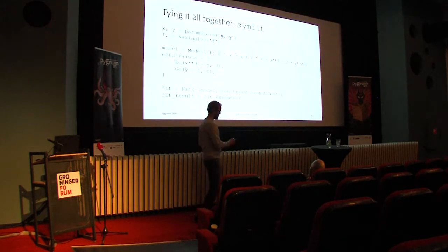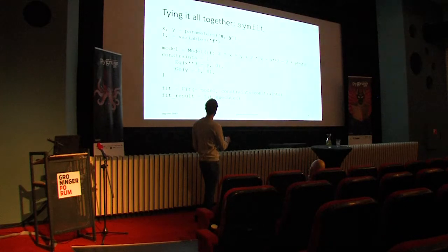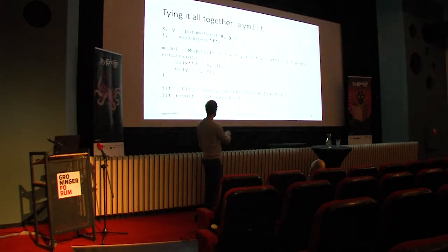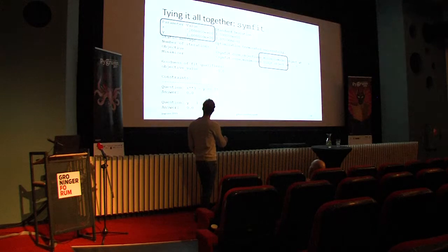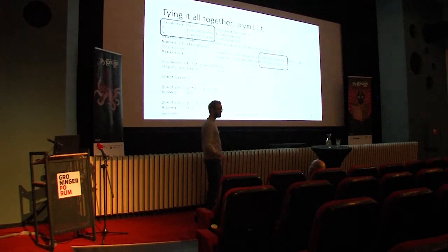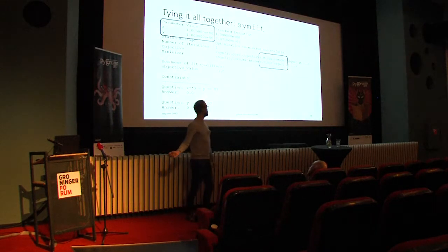Upping the difficulty level, starting from the same model but adding constraints - x cubed minus y equals one, and y minus one greater or equal to zero - adding the constraints is simply a matter of saying fit minus the model to maximize with these constraints. Executing the fit, we find different values; the right answer is one comma one. More importantly, SymFit automatically selected the SLSQP minimizer from SciPy, which supports constraints, without us having to tell it to do that.